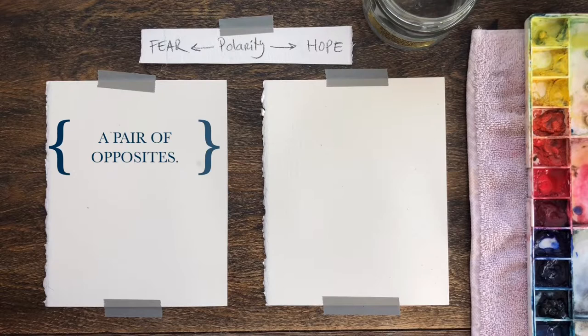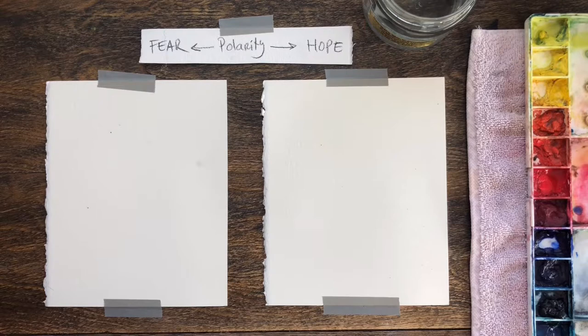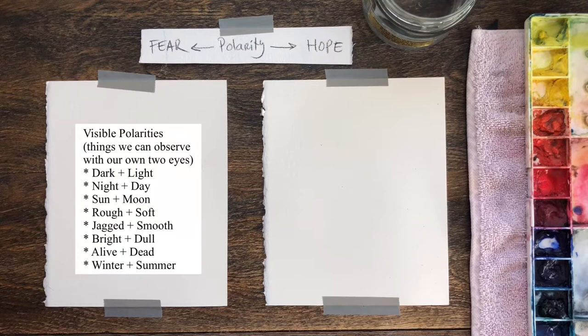Then you will need to choose a polarity — that's a pair of opposites, and this part might take a little extra thinking. The polarities could be something observable in the natural world, like dark versus light or rough versus smooth. Sometimes you have to search a little bit: is the polarity rough versus soft or jagged versus smooth? There are a couple possibilities — any polarity that speaks to you.